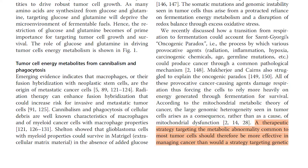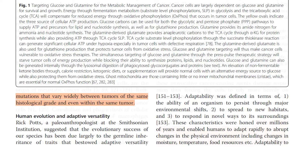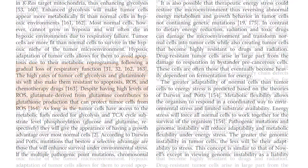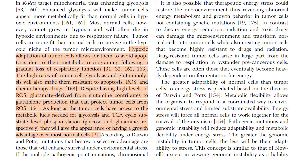A therapeutic strategy targeting the metabolic abnormality common to most tumor cells should therefore be more effective in managing cancer than would a strategy targeting genetic mutations that vary widely between tumors of the same histological grade, and even within the same tumor. It is important to recognize that mutations in p53, KRAS, and RAF impact negatively on mitochondrial energy efficiency, thus making cells with these mutations less metabolically flexible than normal cells. Hypoxic adaptation of tumor cells allows for them to avoid apoptosis due to their metabolic reprogramming, following a gradual loss of respiratory function. The high rates of tumor cell glycolysis and glutaminolysis will also make them resistant to apoptosis, ROS, and chemotherapy drugs.